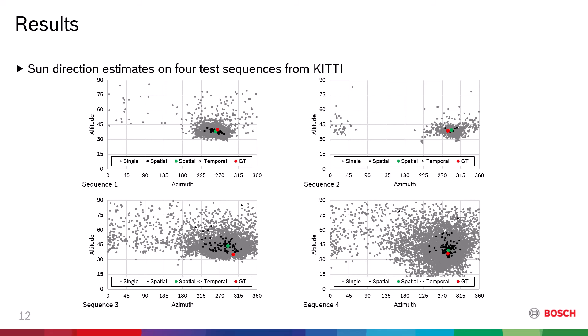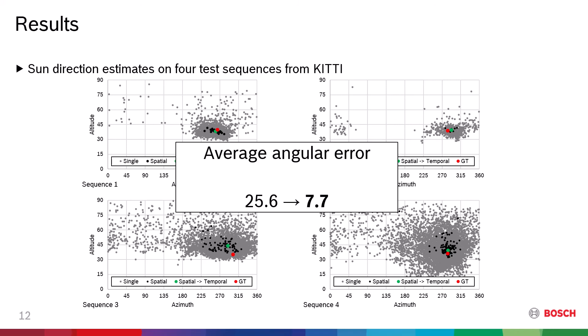Individual estimates for sub-images are represented with gray dots. Our spatial aggregation process refines the noisy observations using outlier removal and mean shift as you can see from the black dots. Those estimates for each frame in a sequence are finally combined in the temporal aggregation step whose output is shown with the green dot. The ground truth direction is indicated by the red dot. Using the spatial-temporal filtering, the average angular error over the test sequences recorded 7.7 degrees, which is a reduction of 70% from 25.6 degrees for single image-based estimation.